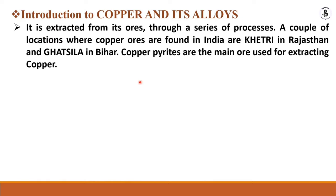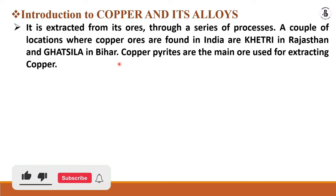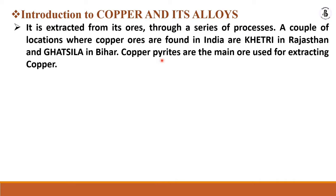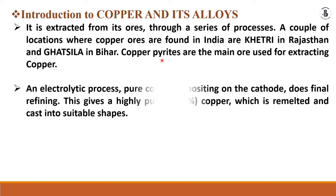Basically copper is extracted from its ores through a series of processes. A couple of locations where copper ores are found in India are Khitri in Rajasthan and Gatshila in Bihar. Copper pyrites are the main ores used for extracting copper. An electrolytic process deposits pure copper onto the cathode as the final refining step, giving highly pure copper of about 99.9%, which is remelted and cast into suitable shapes for different applications.